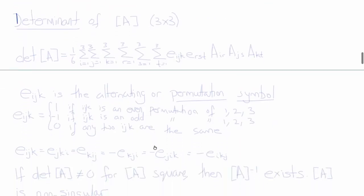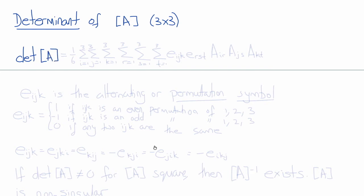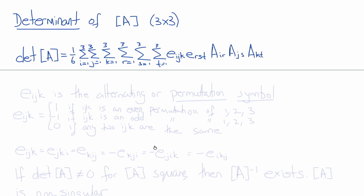The determinant is another familiar property of a matrix. For a 3 by 3 matrix A, we can write the determinant as a nested summation: 1 over 6 times the sum over I, J, K, R, S, T each from 1 to 3, of the special symbol EIJK times ERST times AIR times AJS times AKT. This special symbol, which enables us to write the determinant in indicial notation, is called the alternating or, more commonly, the permutation symbol.